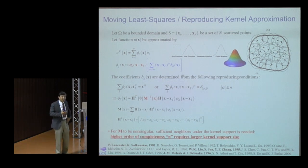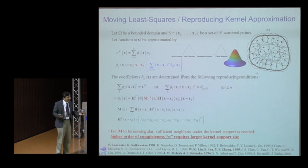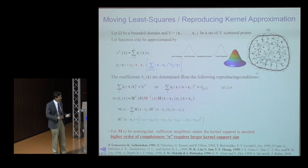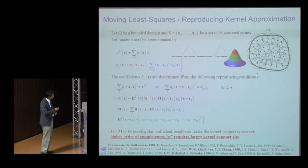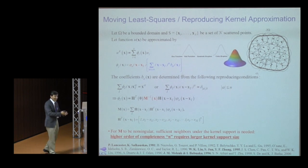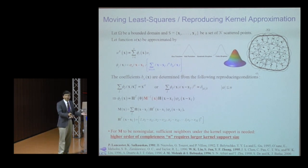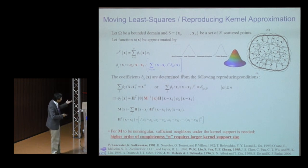This creates a dilemma: higher-order completeness requires larger support and more neighbors, but under very large deformation and fragmentation you must continuously update neighbors — which is expensive and makes coding complex. Alternatively, constant bases provide only partition of unity with slow convergence.